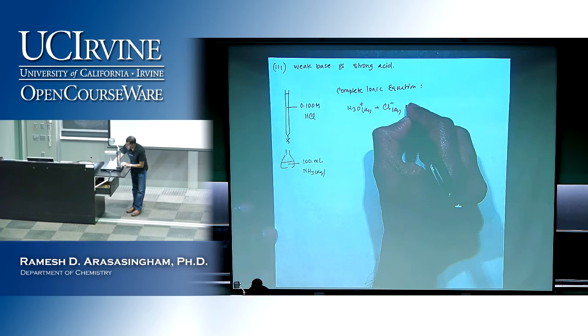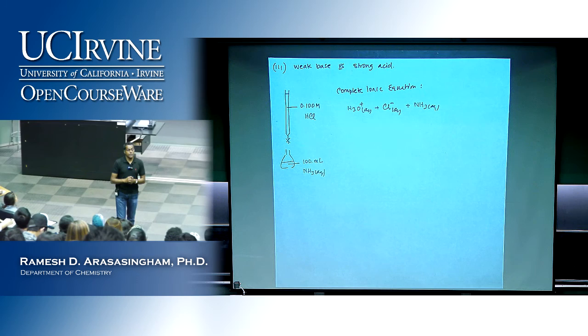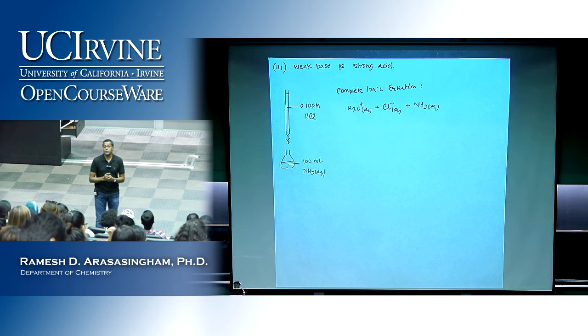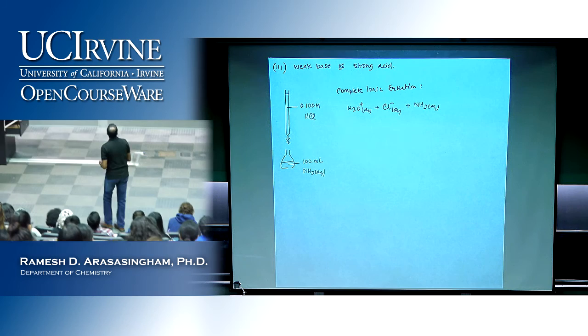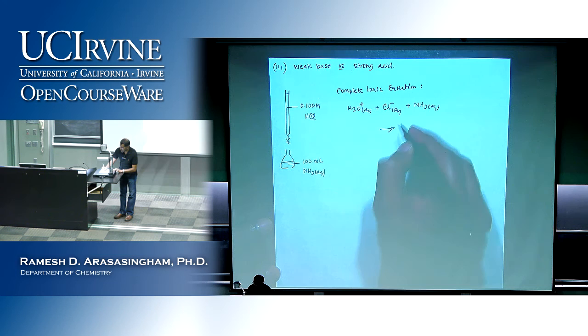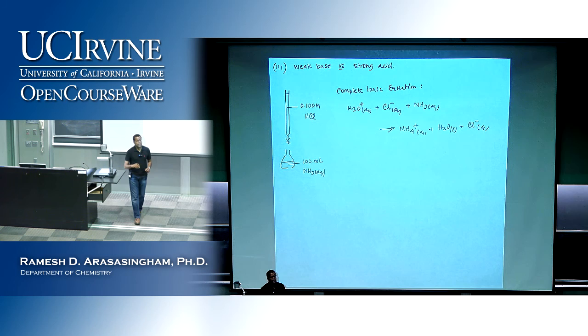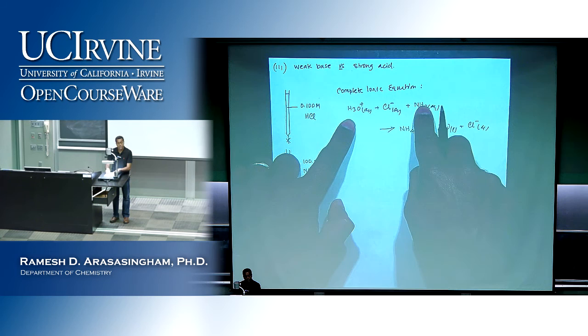Now we have the weak base. Weak bases do not dissociate, do not react with water — they tend to be undissociated. They would not pick up a proton because it's a weak base; when we see the word 'weak,' it means its preference is to remain the way it is. So the base and the acid react to give NH₄⁺ aqueous, water, and Cl⁻ aqueous.